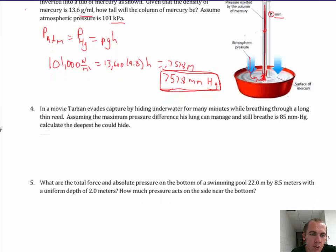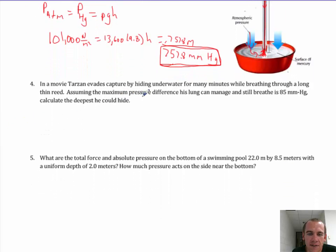Which is what problem four is actually doing. It says, in a movie Tarzan evades capture by hiding under water for many minutes while breathing through a long thin reed. Assuming the maximum pressure differences lungs can manage and still breathe is 85 millimeters of mercury. That seems like a funny unit for pressure but it's telling you if this column of mercury is 85 millimeters high it has the same pressure as how much pressure his lungs can overcome.